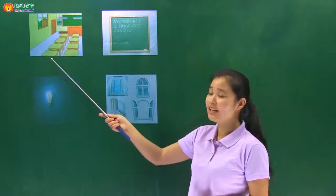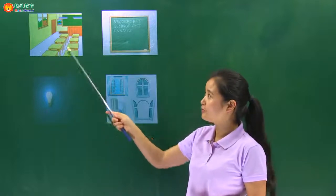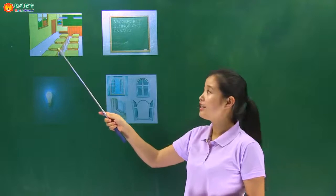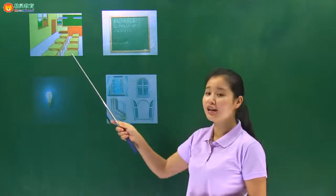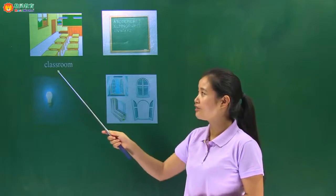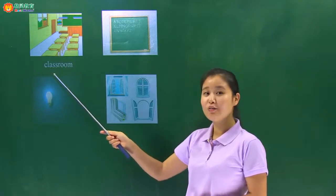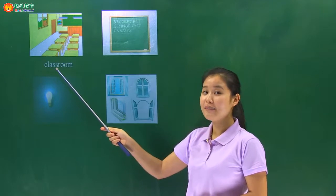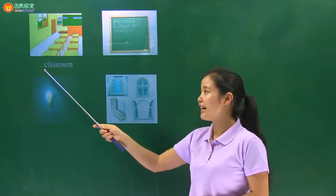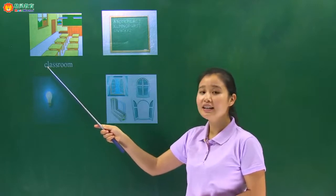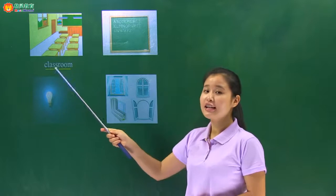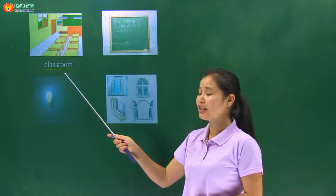好，下面我们看图画，来看一下这些图画都是哪些单词。The first picture，第一幅图画，It is a classroom，那是一间教室，classroom. 我们看一下这个教室这个单词：class，我们已经学过了，是课、班级；room，房间。那这是两个单词合在一起，classroom，表示的是教室——上课的房间。